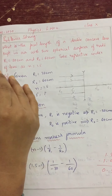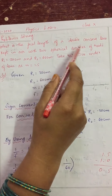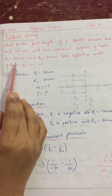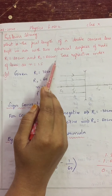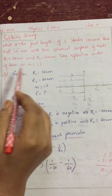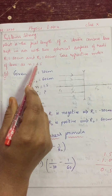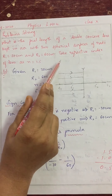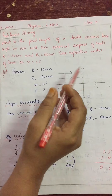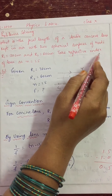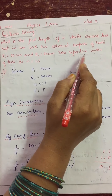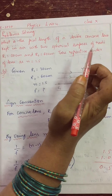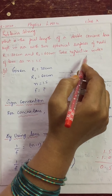Let's see the first question. He is talking about a lens, but how do we know whether to use the lens formula or the lens maker formula? Whenever the question mentions the refractive index and two radii of curvature, that means we need to use the lens maker formula.